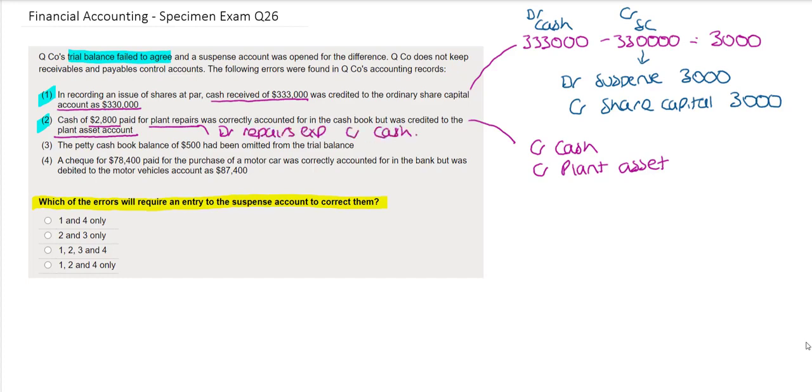We therefore need to do two things. We need to remove the balance from the plant asset account and we also need to put it in the repairs account on the correct side. So we will need to debit the plant asset account to remove the balance for $2,800. We will then need to debit the repairs account for $2,800 and the other side to correct will be to credit the suspense account with $5,600.